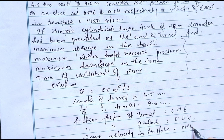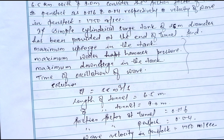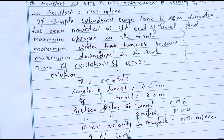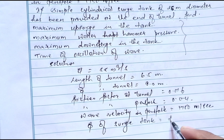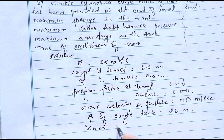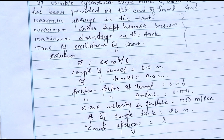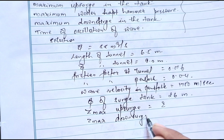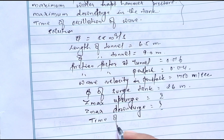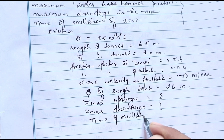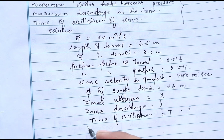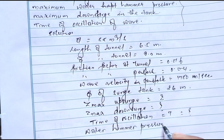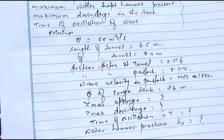Wave velocity in penstock = 1750 meters per second, and diameter of surge tank = 26 meters. We need to find: Z_max upsurge, Z_max downsurge, time of oscillation T, and maximum water hammer pressure S_0. Neglecting friction, the maximum water hammer pressure can be given as S_0 = C × V_p / g.